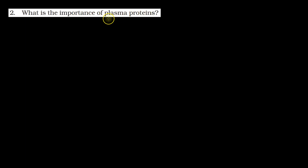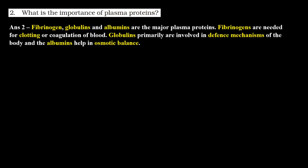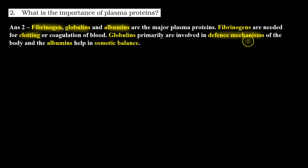Let's check the answer. Plasma proteins include fibrinogen, globulins, and albumins. Fibrinogen participates in blood clotting, globulins participate in the defense mechanism, and albumins maintain osmotic balance.